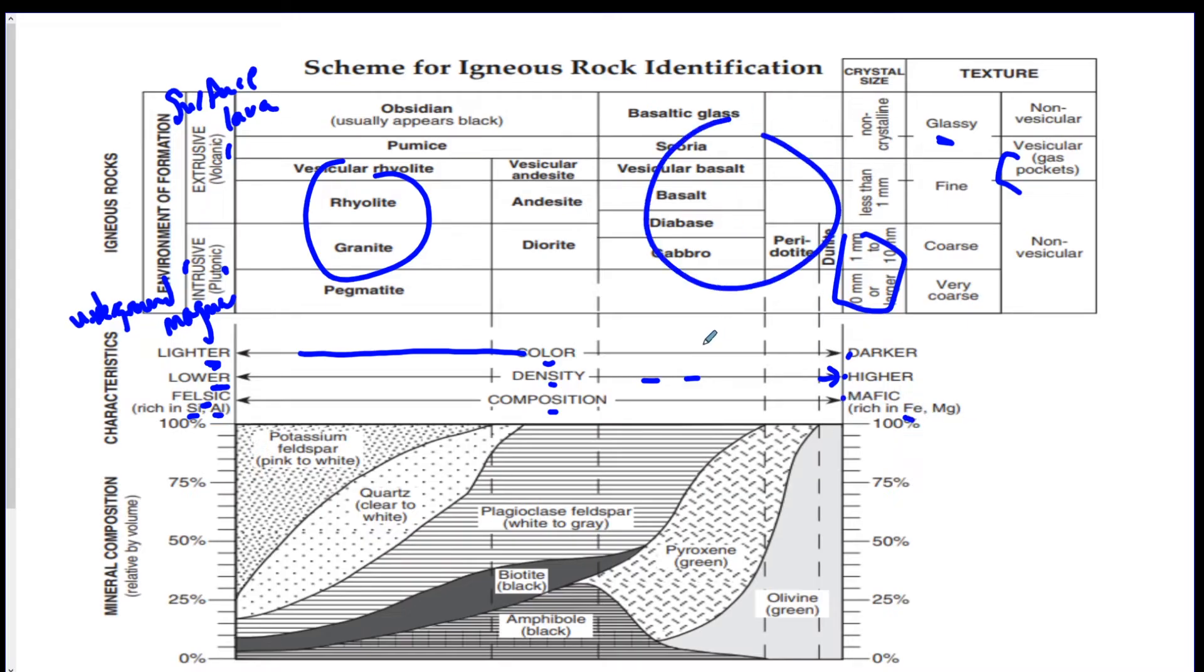If you go down here, the bold rock names correspond to the color, density, and composition arrows that run left to right. So you can see as you go to the left, these rocks over here are lighter in color, lower in density, and they're called felsic, because they have silicon and aluminum elements inside of them generally.